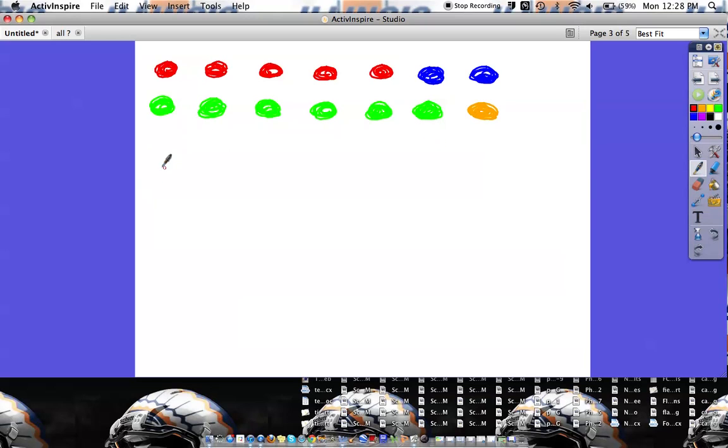So first of all, let's figure out a probability of, in the bag, drawing out a green Skittle, followed by a blue Skittle. And we are going to put it back. We're going to put it back after we've drawn it. So when we take out the green, we're going to put it back.